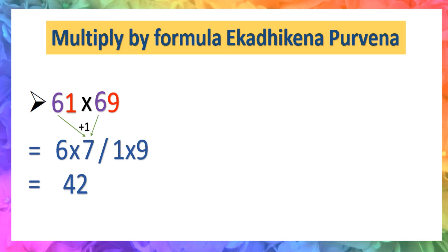To make 9 a 2-digit number, we use 0. So 1 × 9 becomes 09, and the final answer is 4,209.